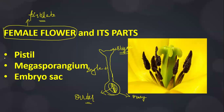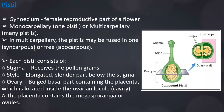In this session we will be discussing the pistil, megasporangium and the embryo sac. Gynoecium is the female reproductive part of the flower. It consists of three main structures: the stigma, style and the ovary. After fertilization, the ovary gets converted into fruit, and ovules get ripened to form the seeds of the next generation.